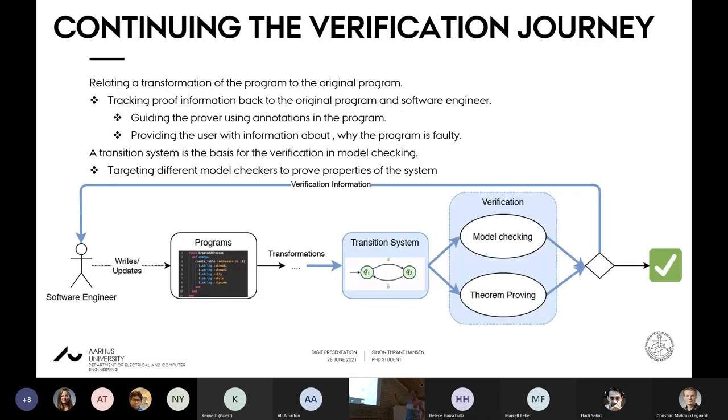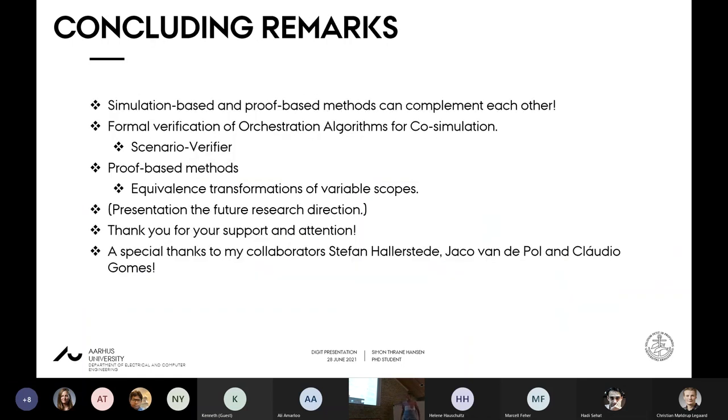When we should talk about continuing the journey in this direction, when we have done some transformations already, we want to create the transition system and then explore the verification box. Also explore how we could send useful information about the program from the verification back to the user. The user essentially can use that to correct the program, but also guide the theorem prover. Yes, that was all I had to say.